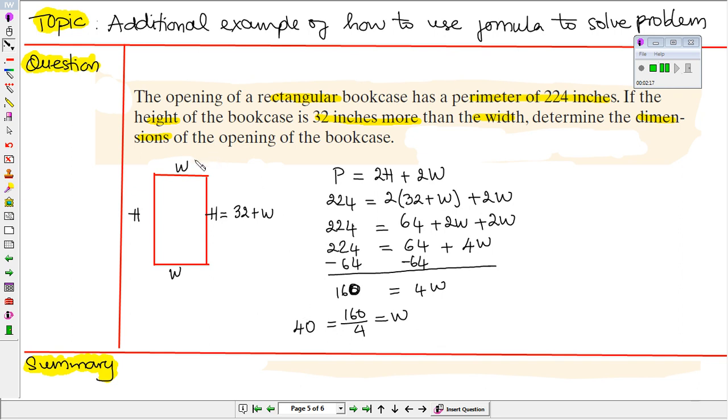So we have the width will be 40 inches. Therefore, the height will be 32 plus 40, so the height will be 72 inches. We want to check to make sure that we have the correct answer.